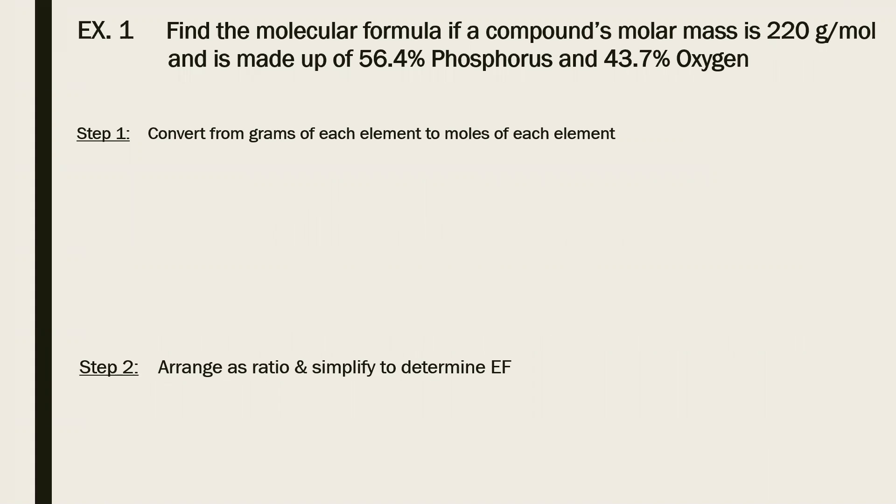So first example, find the molecular formula if a compound's molar mass is 220 grams per mole and it is made up of 56.4% phosphorus and 43.7% oxygen. So we first, step one and two, have to do the empirical formula. So this is nothing new.